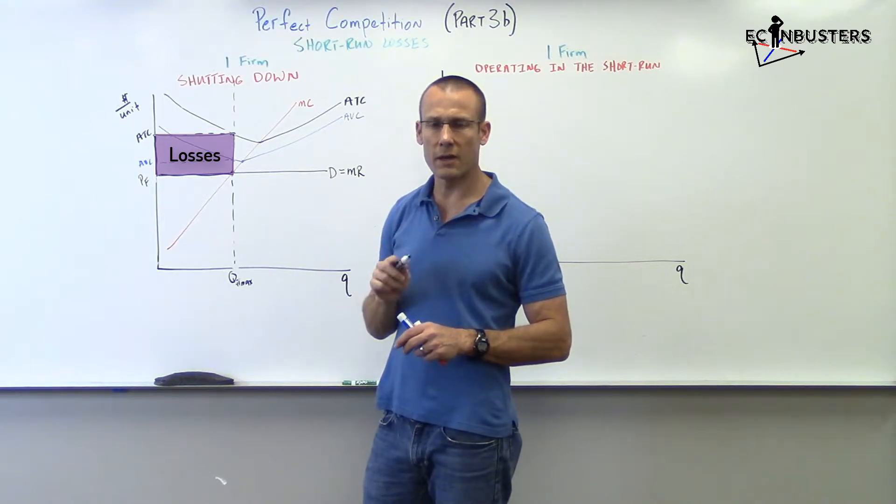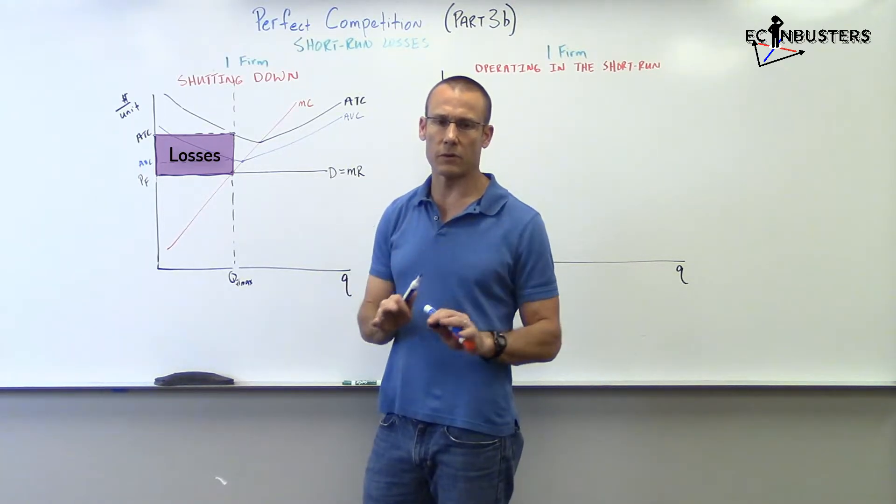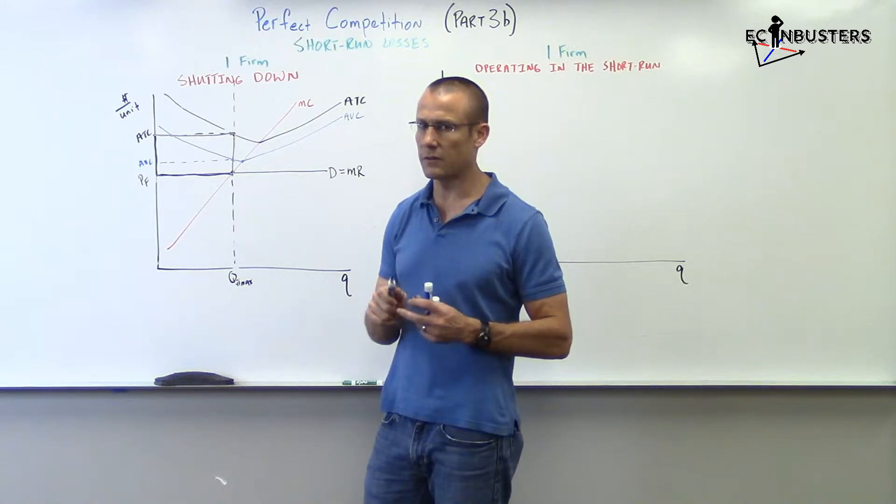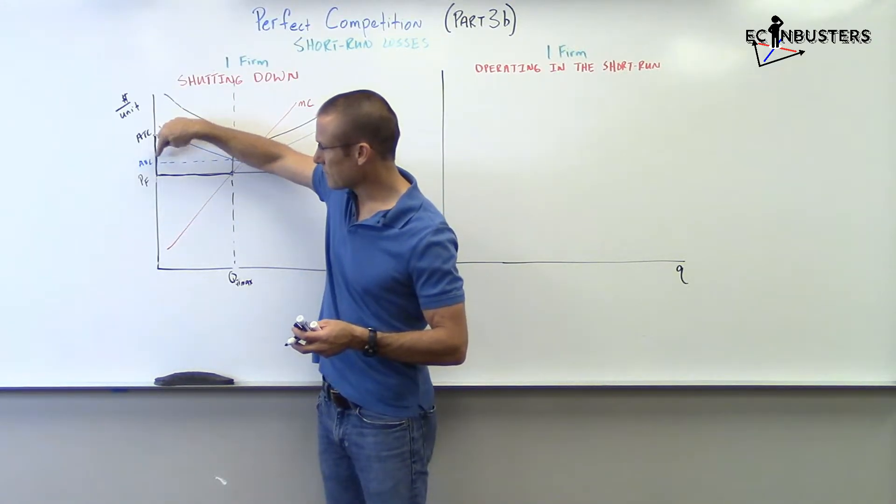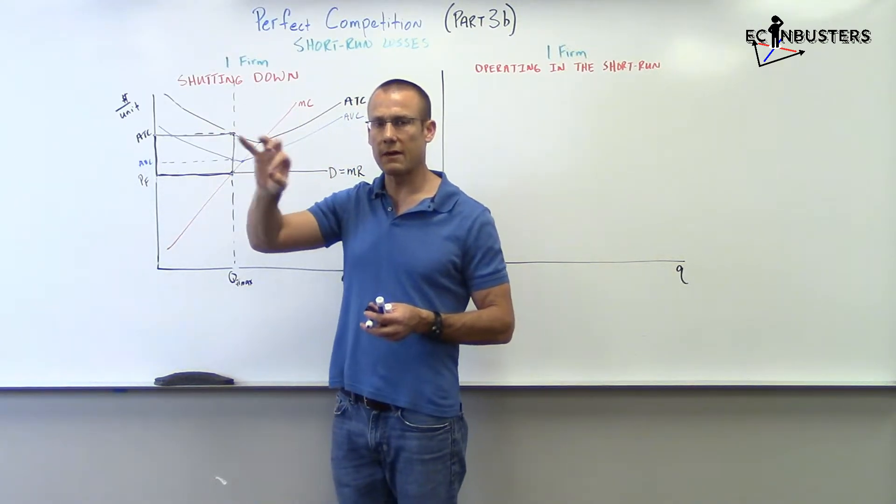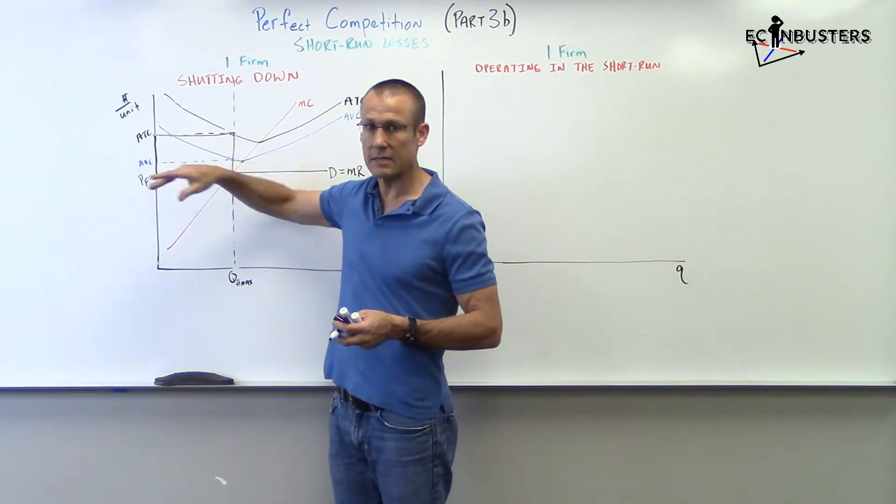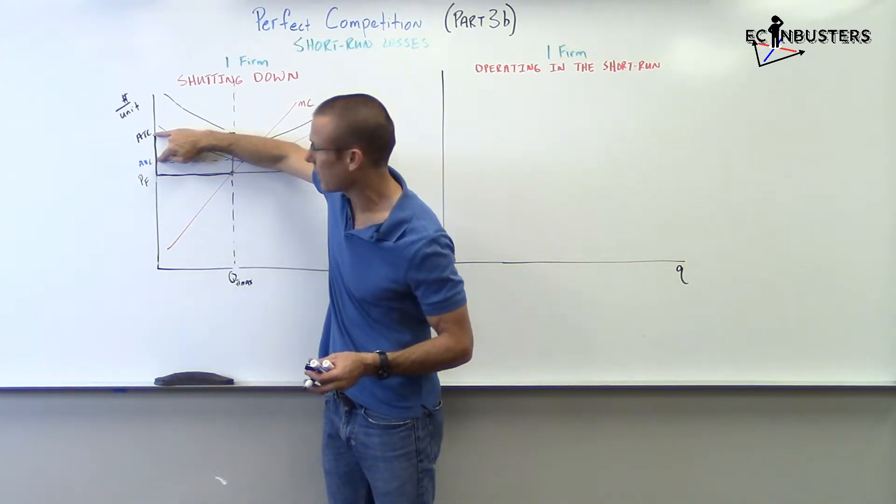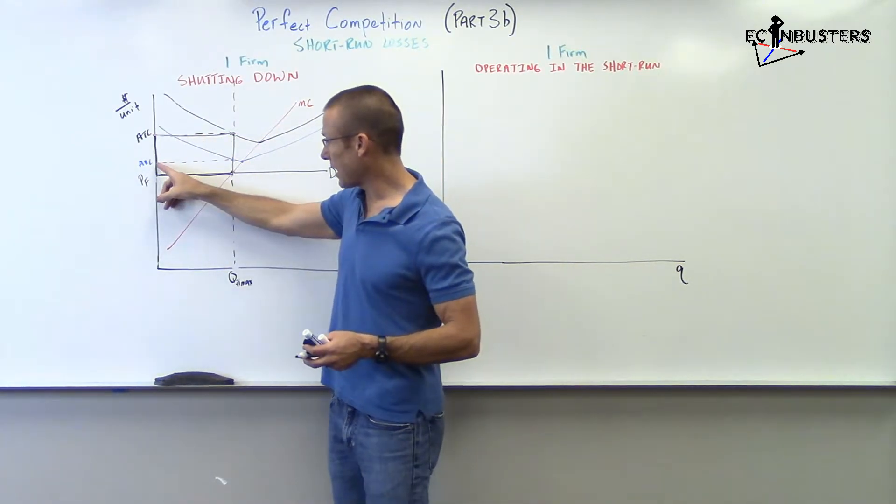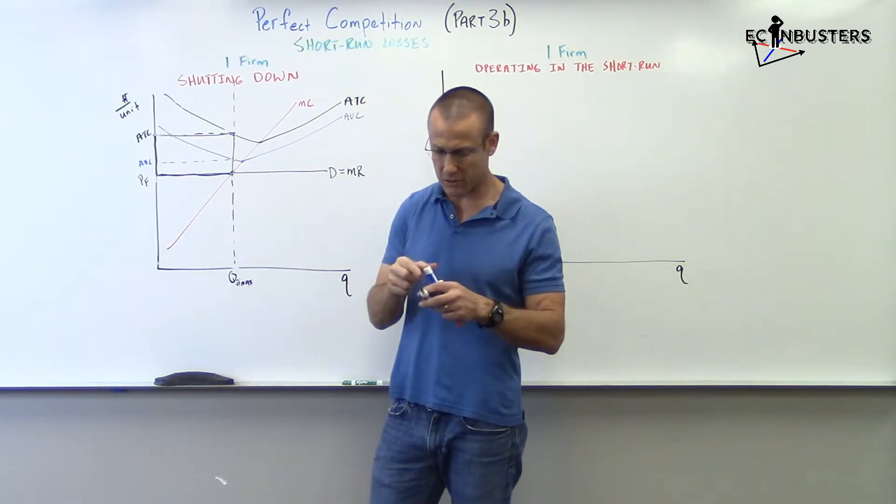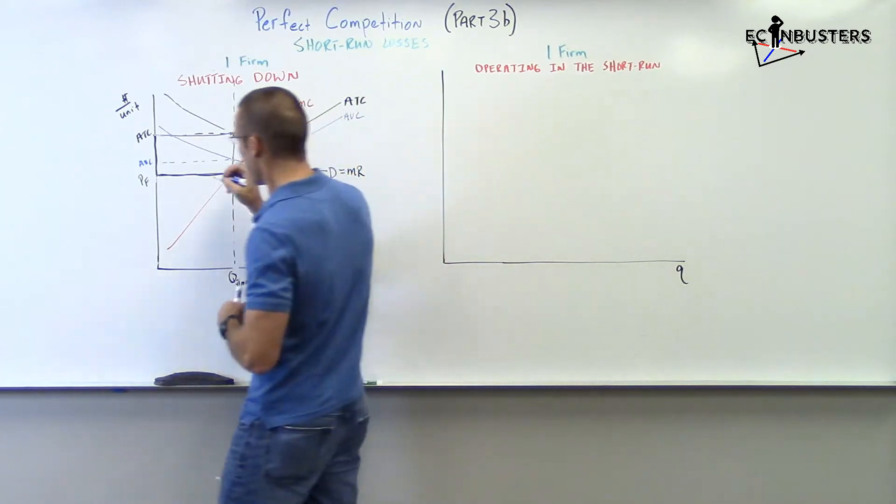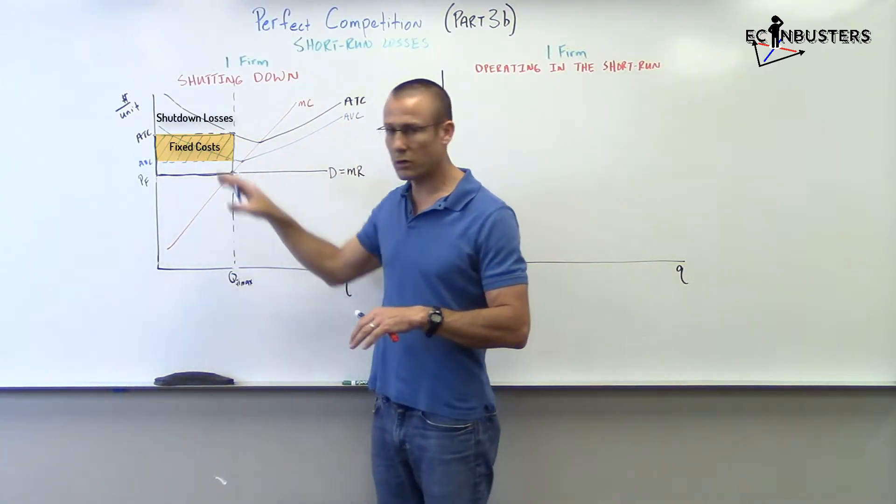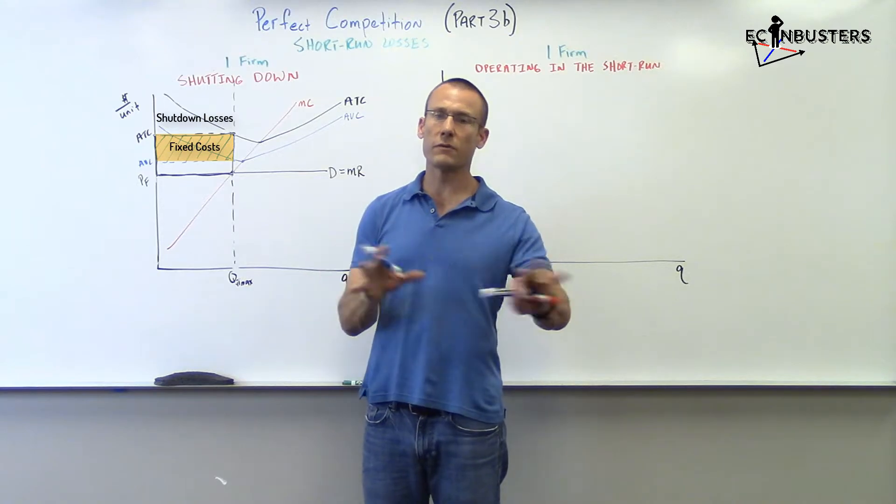However, if we shut down, we won't incur any average variable cost. We won't incur any variable cost. However, we will incur the fixed cost, and we can find the fixed cost on this graph. All right, ATC minus AVC is AFC, right? ATC minus AVC is AFC, is average fixed cost. So, that vertical distance right there is average fixed cost.